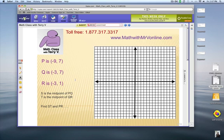P, Q, and R are the vertices of a triangle and we'll locate those on the graph. We're given that S is a midpoint and T is a midpoint, and then we have to find the length of ST and PR. First, let's go ahead and plot those points.